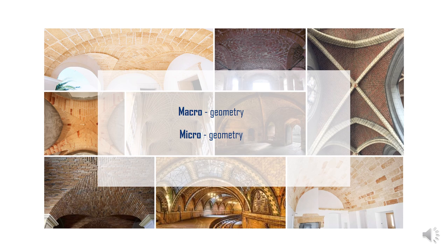With macrogeometry we denote the overall dimensions of the vault and its geometrical configuration. The same macrogeometry can be built with different materials, stones or bricks, and with different patterns of the masonry apparatus. These features denote what we call microgeometry, and are mainly related to the historical building practice relative to a specific age and geographical area.